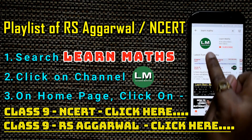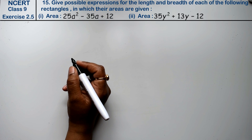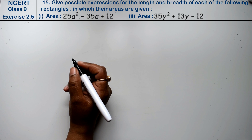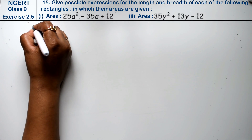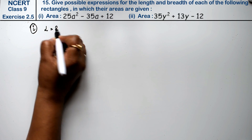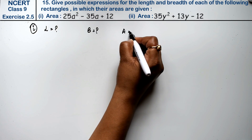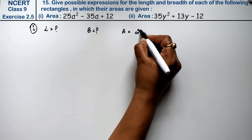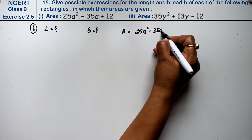Let's do question number 15 of exercise 2.5, that is a polynomial question. Question number 15 says: give possible expressions for the length and breadth of each of the following rectangles in which their areas are given. I am going to do the first part. We have to find length and breadth given the area 25a² minus 35a plus 12.